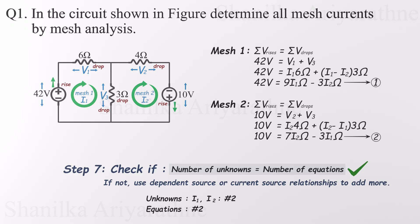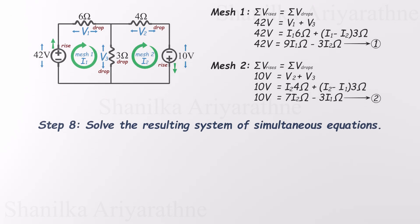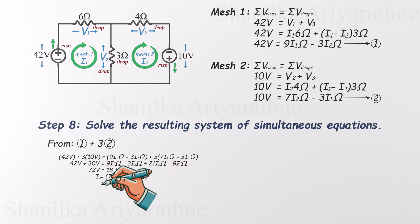Finally, it's time to solve the simultaneous equations and find the mesh currents. We'll start by eliminating I1 from both equations to isolate and solve for I2. After a bit of algebra, substituting and simplifying, we find that I2 comes out to be 4 amperes. That's one mesh current down. Once we have I2, we can plug it back into either equation to find I1 and complete the solution.